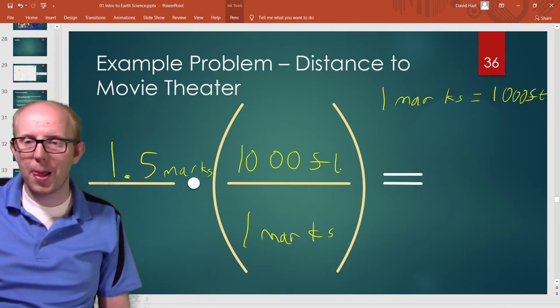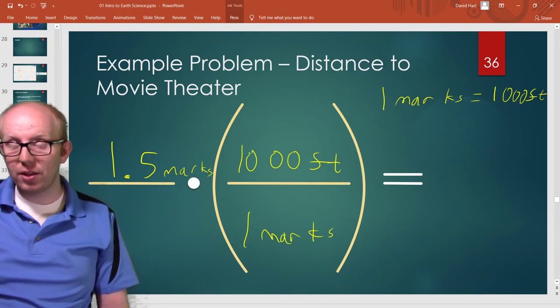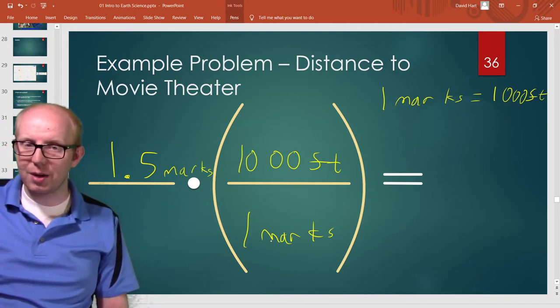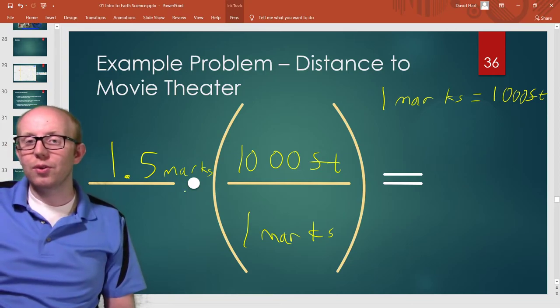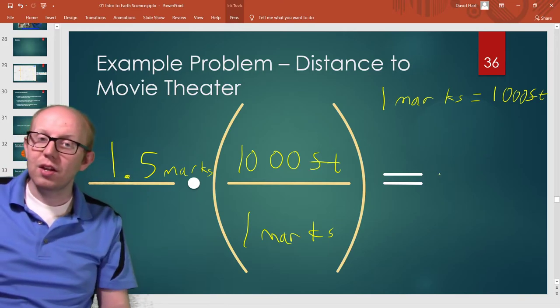And then what's going to happen is we're going to multiply those two numbers together and divide by the one on bottom. So the real distance is 1.5 times 1,000 feet divided by one. If you put that in your calculator you get 1,500 feet.